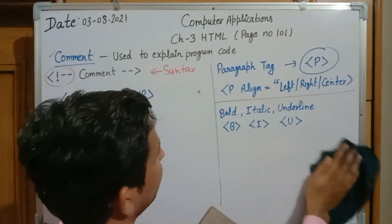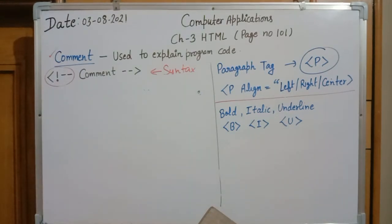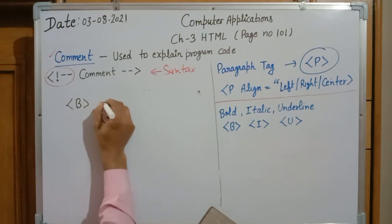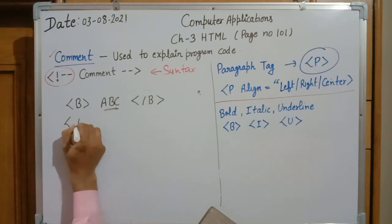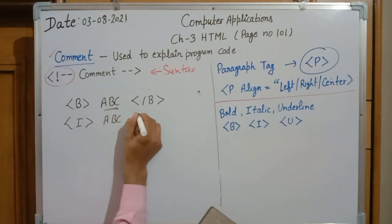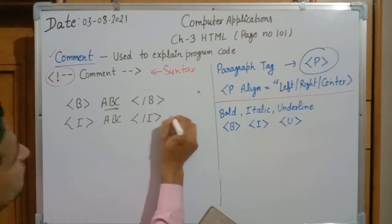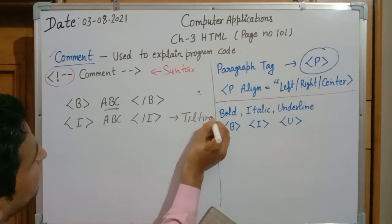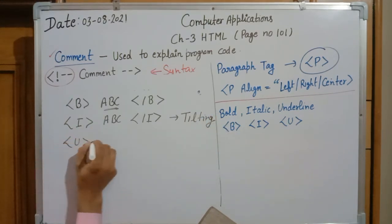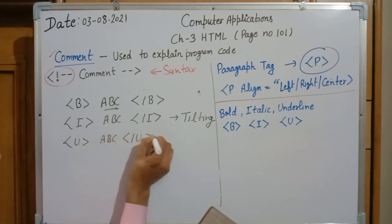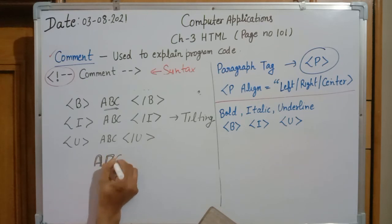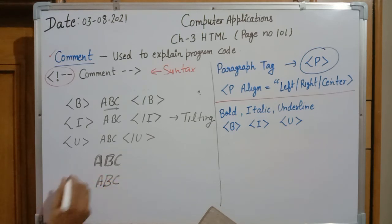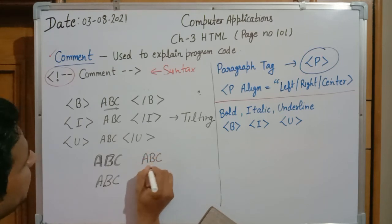Now the bold, italic, and underline concepts: bold is used to highlight a specific word — for example, writing 'abc' in the b tag makes it bold and darker. Italic makes text slanting or tilted using the i tag. Underline uses the u tag to add an underline beneath the text. The output of bold appears darker, italic appears slanted, and underline appears with a line beneath.